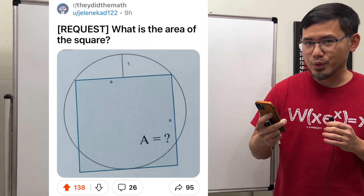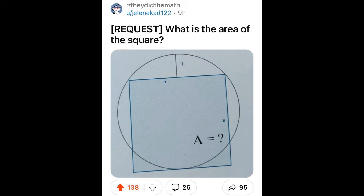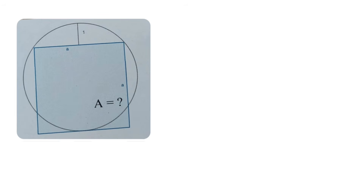What is the area of the square? Let's give it a try. To solve this, first we want the area of the square. This side is already labeled a, and since it's a square, the opposite side in the middle is also a.